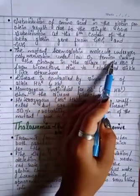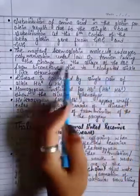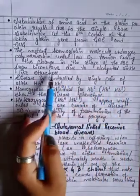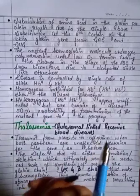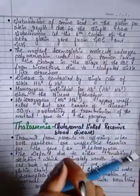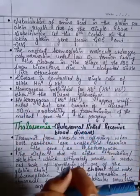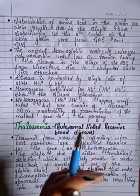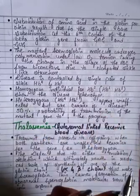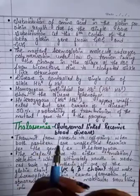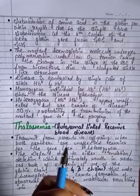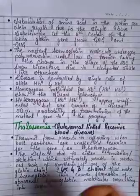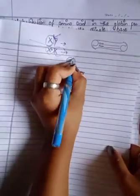The mutant hemoglobin molecule undergoes polymerization under low oxygen tension, causing a change in the shape of the RBC from a biconcave disc to an elongated sickle-like structure.